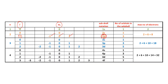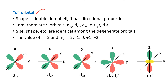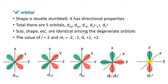The d orbital has a double dumbbell shape — two dumbbell-like structures joined together. There are a total of five d orbitals: dxy, dyz, dzx, dx²−y², and dz². These are degenerate orbitals, meaning they have the same energies. The angular momentum quantum number l is equal to 2, and the magnetic quantum number ml has five values.